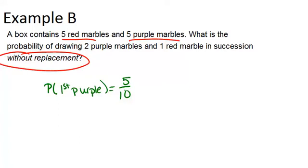Once we've chosen that marble, there will now be nine marbles left in the box. So the probability that the second is purple will be 4 out of 9. So the ten went down to nine, because there's only nine marbles left, and the five went down to four, because if we chose a purple marble the first time, there's only four purple marbles left.